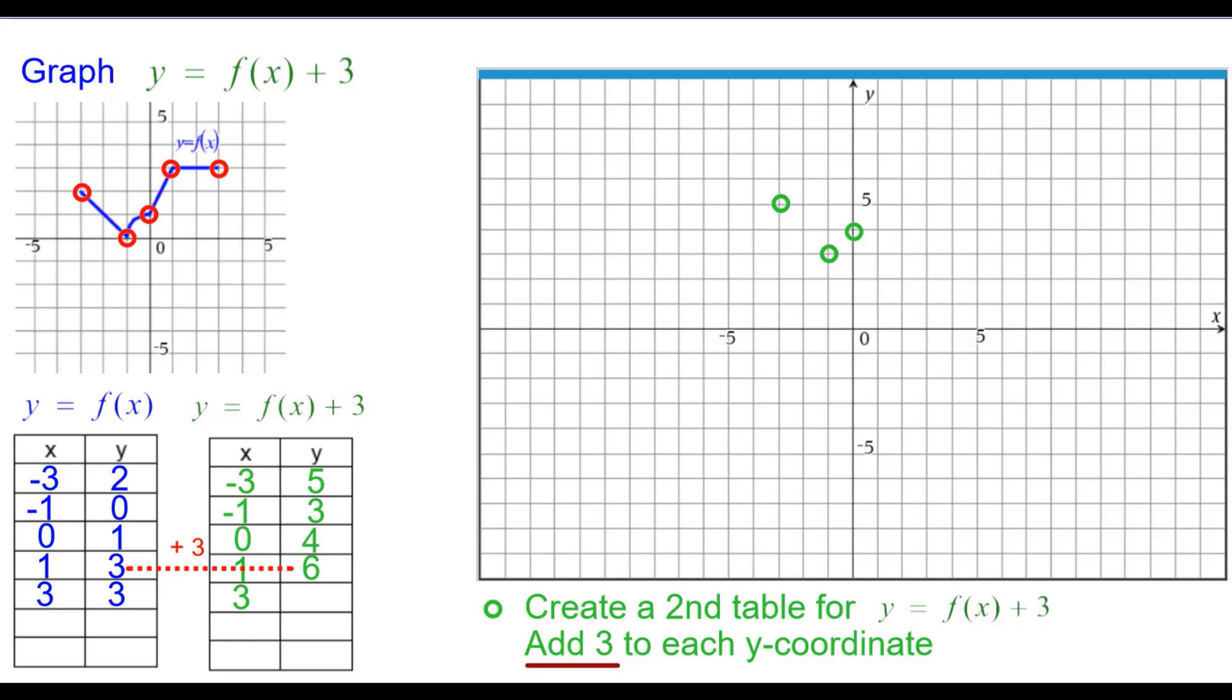3 plus 3 is 6, 1 comma 6. And again, 3 plus 3 is 6, 3 comma 6.